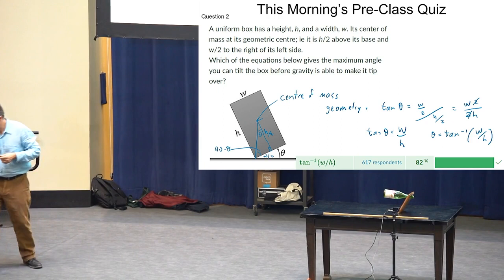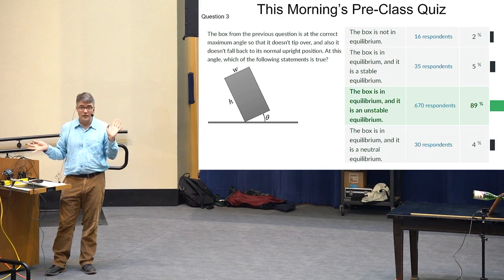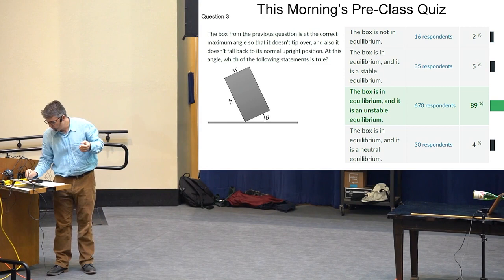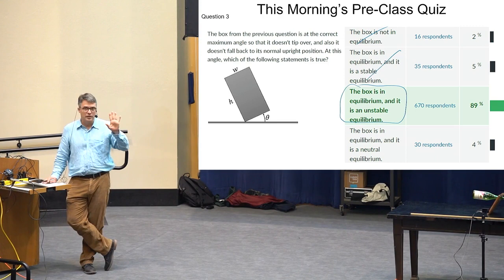At exactly that tipping angle, is the box in equilibrium? Yes — all torques and forces are zero, so technically it's in equilibrium and won't accelerate. But it's an unstable equilibrium. There's also neutral equilibrium: when you push it, it doesn't accelerate — it just moves at constant velocity away from equilibrium.